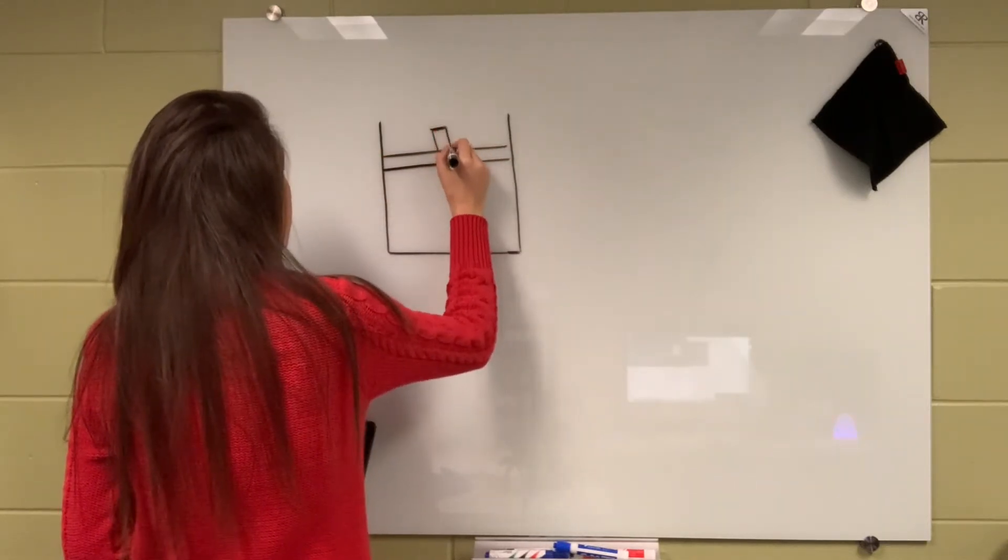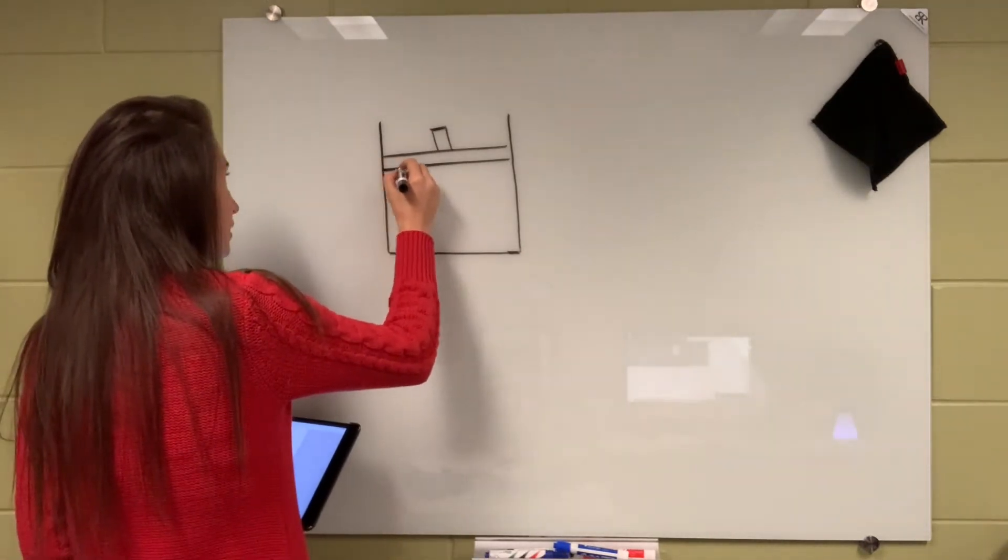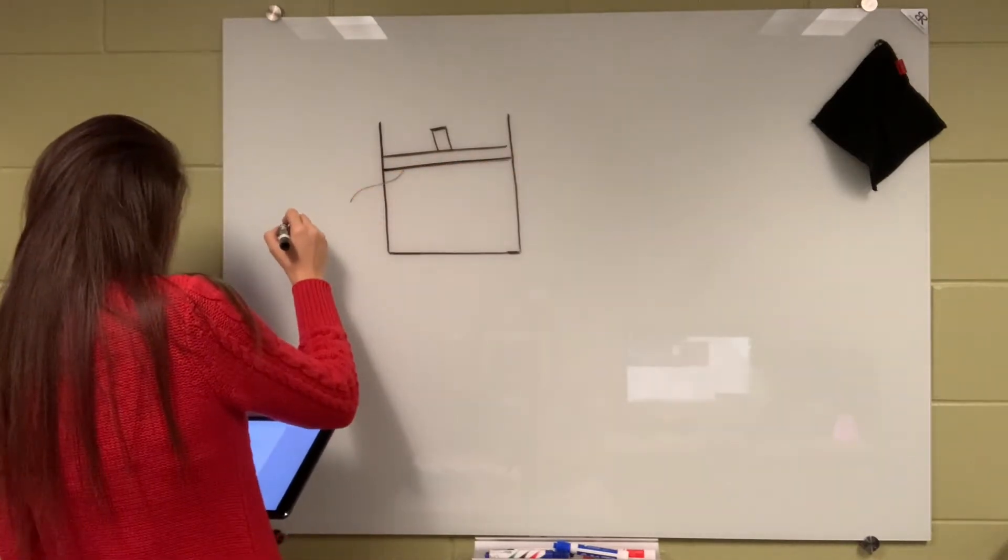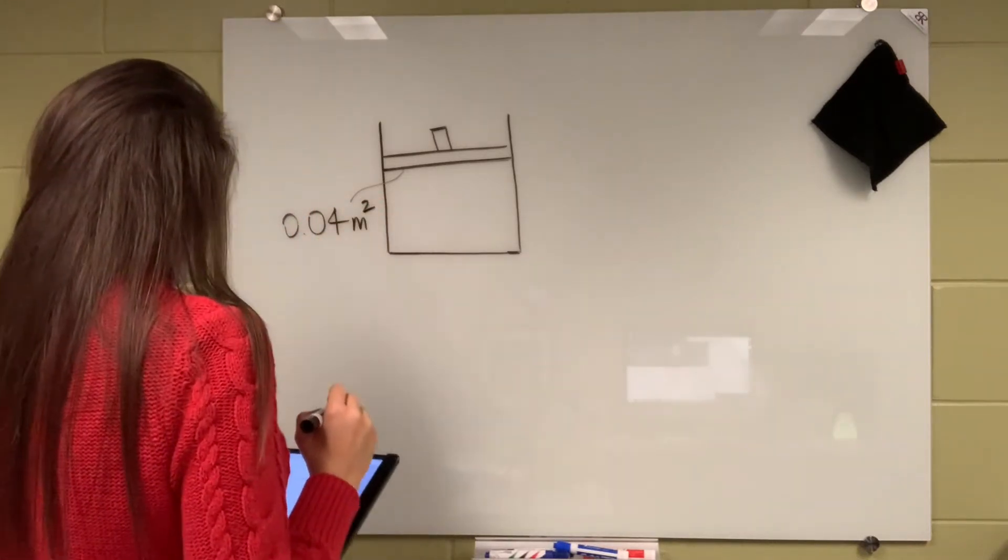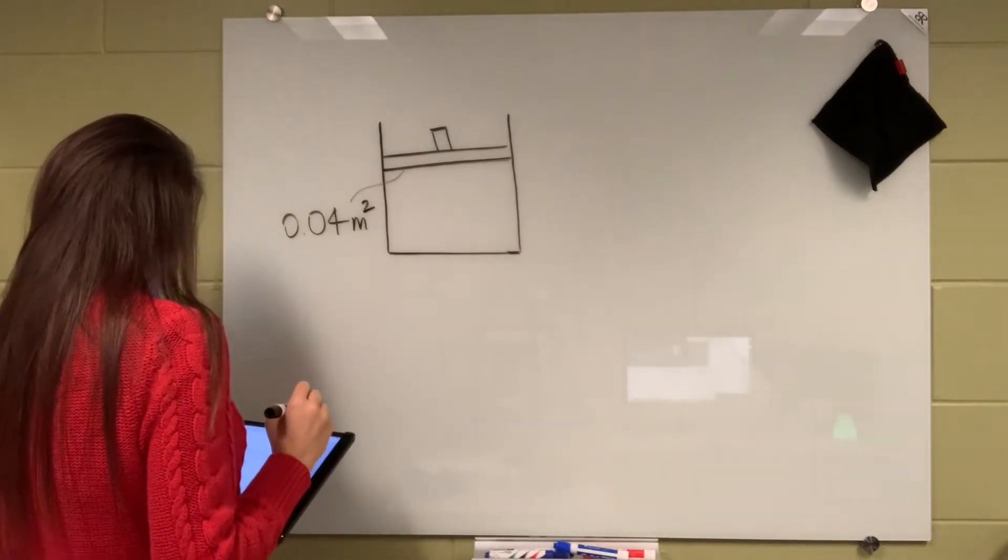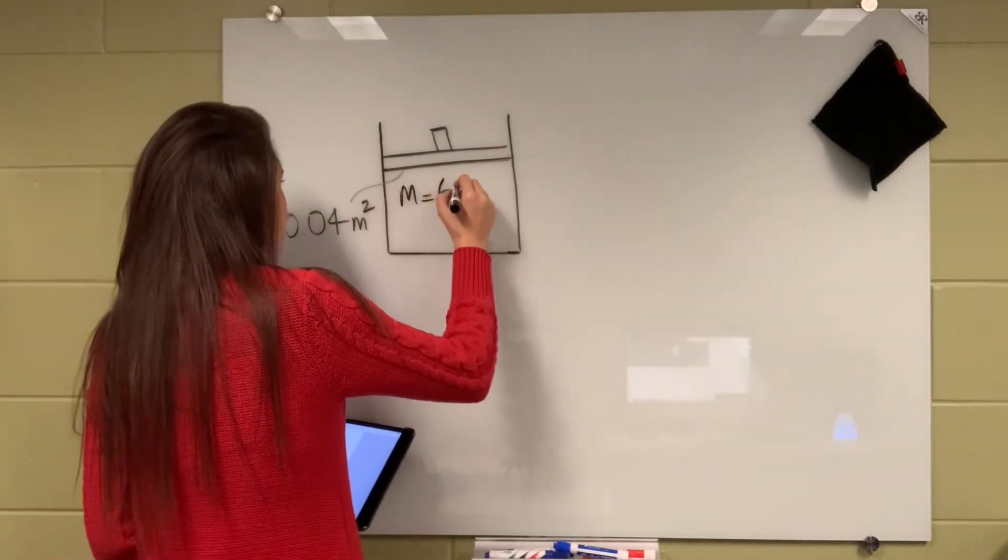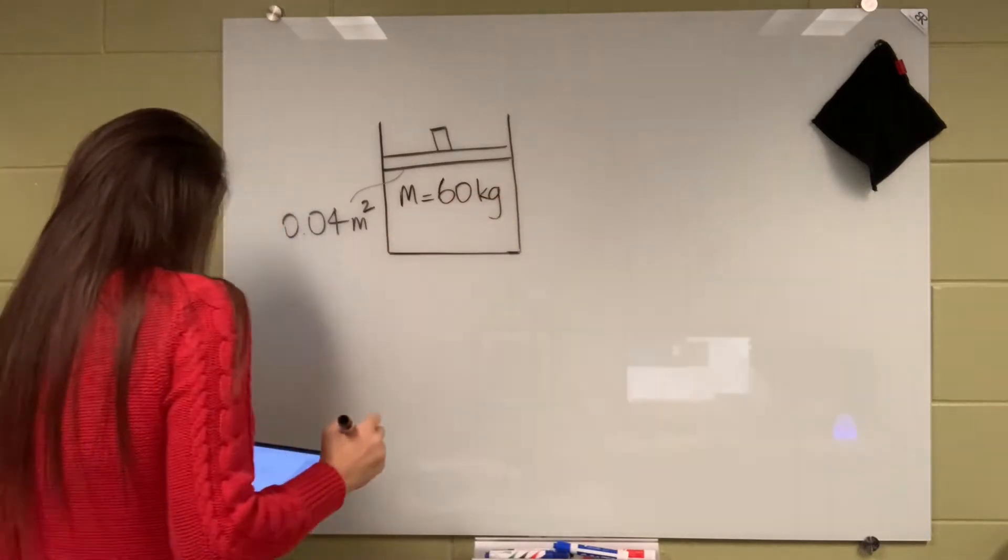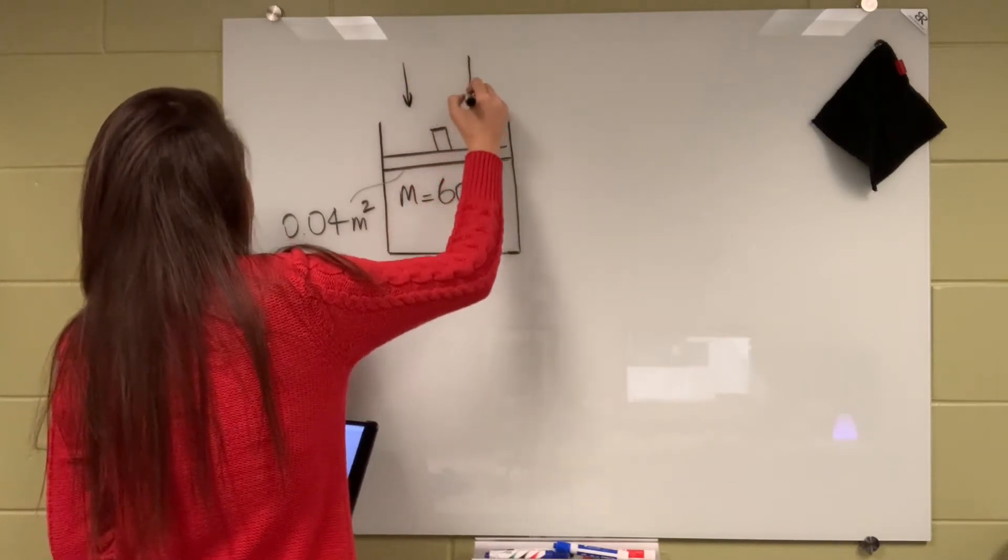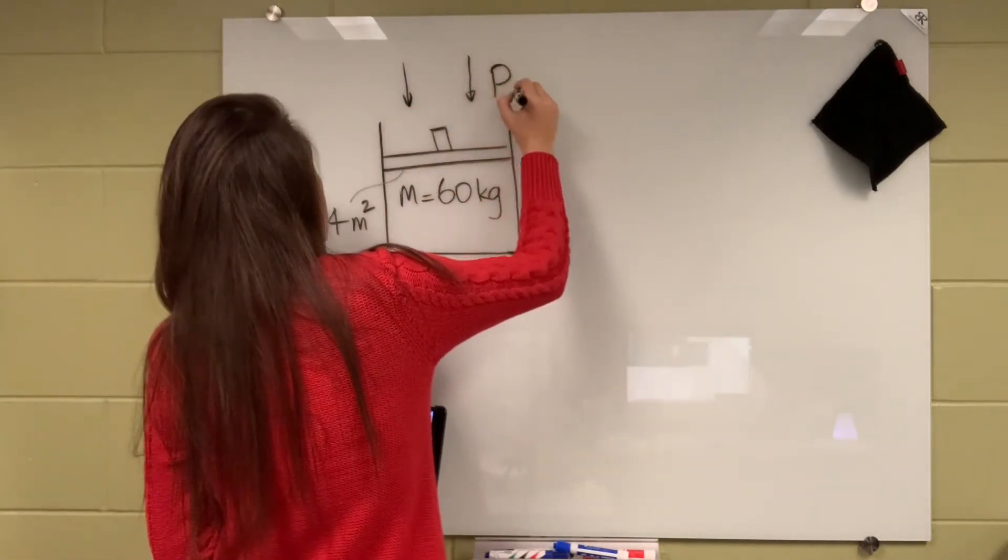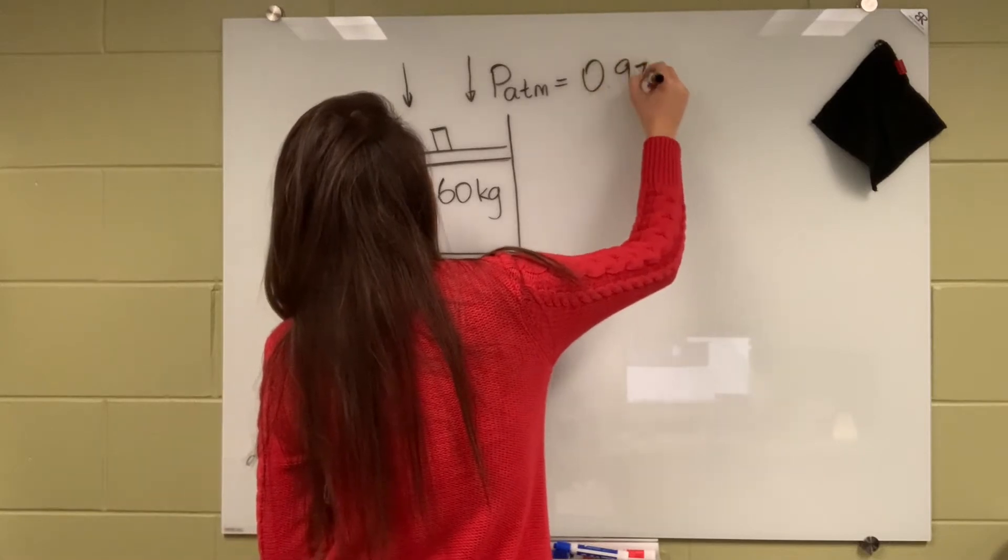Here is our piston and this has a cross-sectional area of 0.04 meter squared. Inside we have a gas with a mass of 60 kilograms.